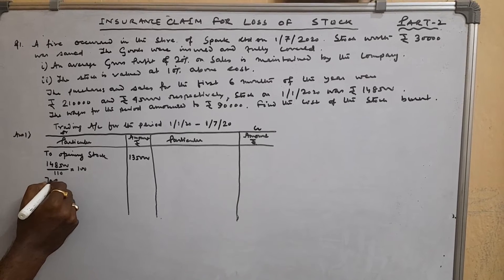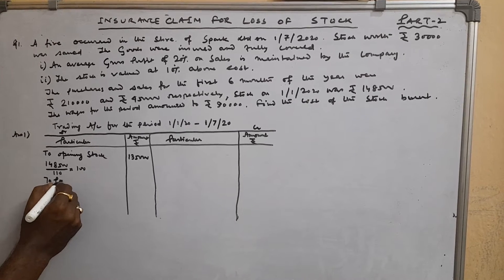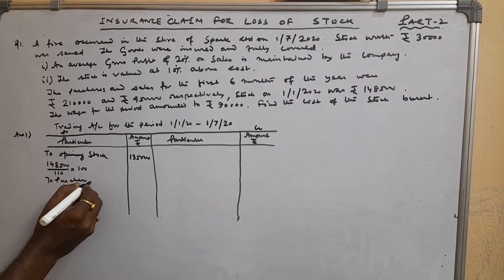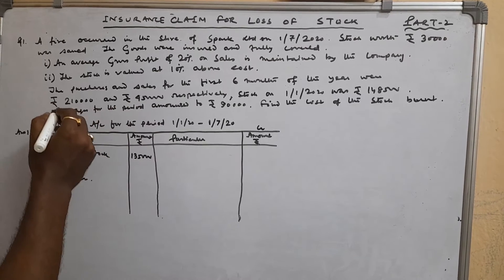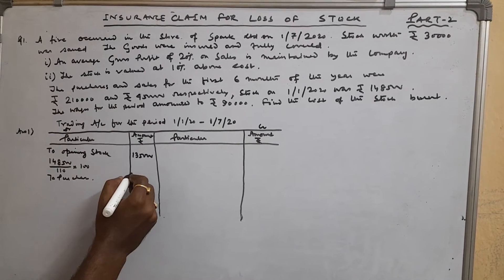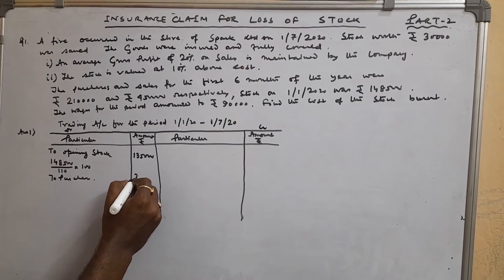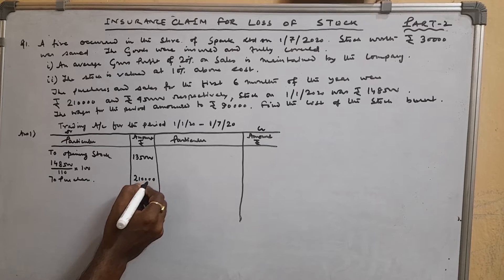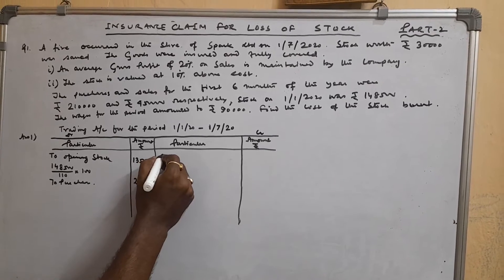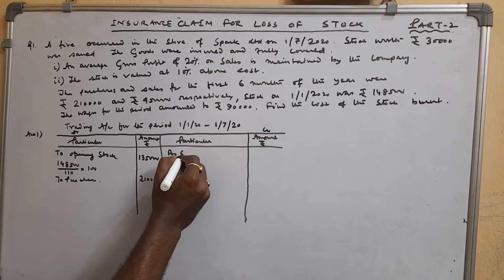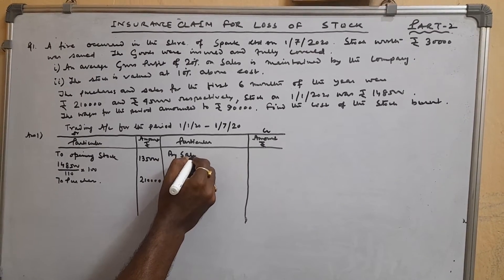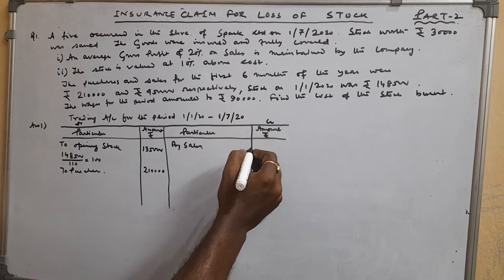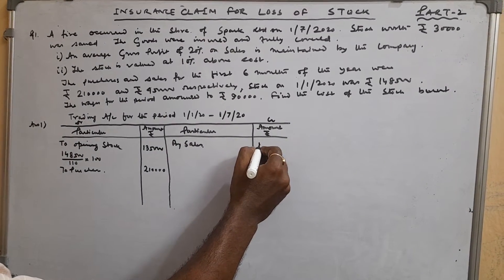To purchases: given in the question, purchases are Rs. 2,10,000. Sales given in the question: Rs. 4,50,000.